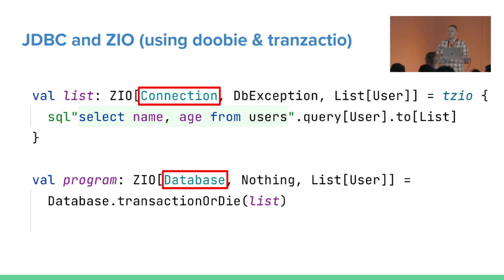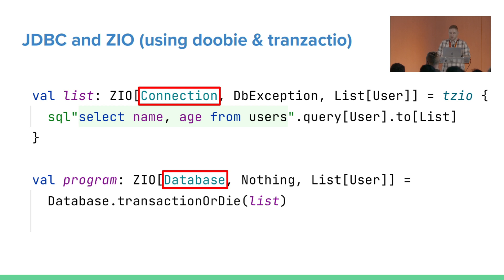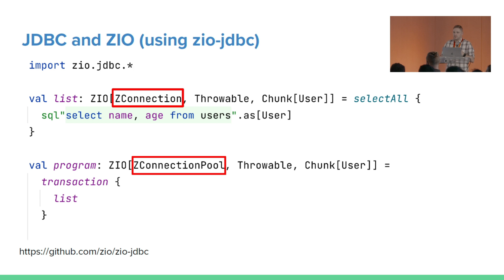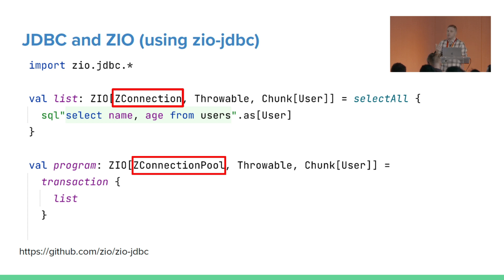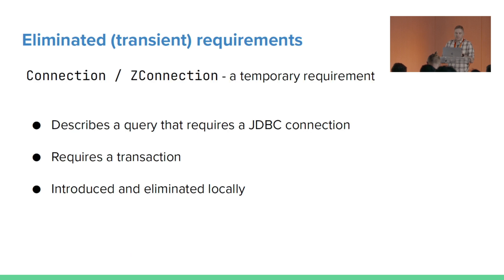Because Transactor.io was born in the ZIO1 days, it specifies that instead of Connection, you have to provide it with the actual database, which describes the actual database connection with the connection pool. This would be a kind of global dependency, but with this library it kind of has to be provided by R. The point is it takes something that requires a Connection and requires you to eliminate it by transacting. If you're using ZIO JDBC, it does more or less the same approach — you can create a query wrapping it with selectAll, and this gives you something that requires a ZConnection. To execute something of a ZConnection, you have to wrap it in a transaction. Both libraries follow the same pattern.